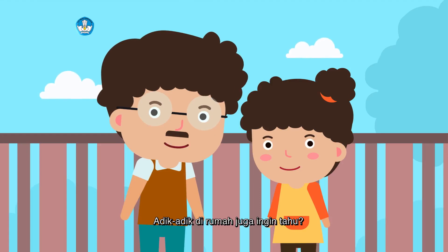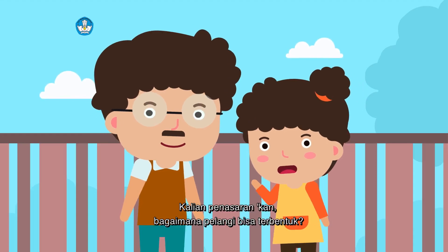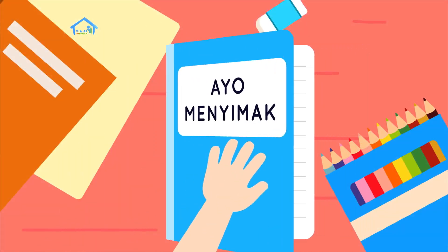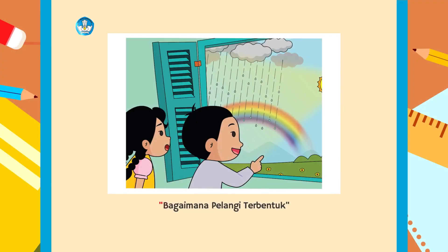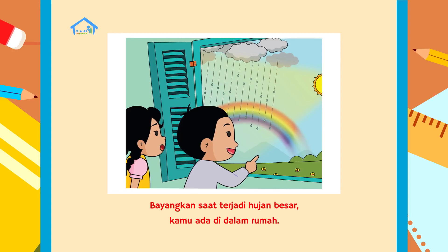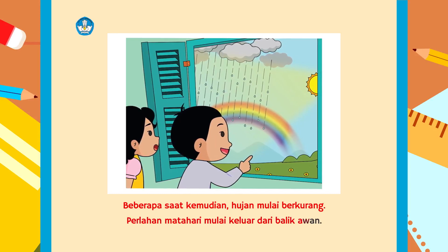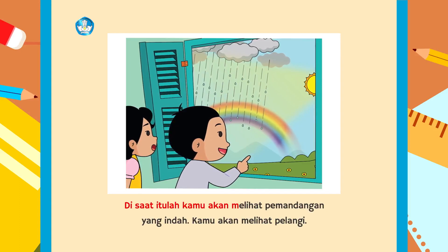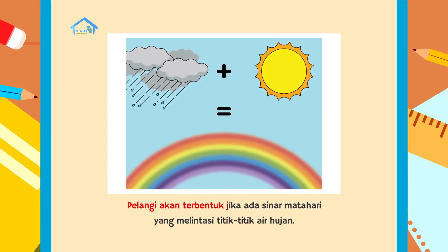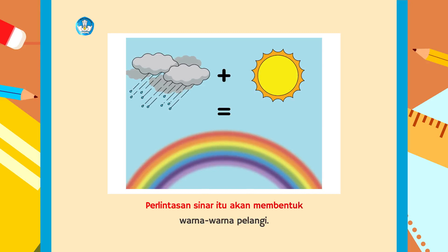Adik-adik di rumah juga ingin tahu. Kalian penasaran kan bagaimana pelangi bisa terbentuk? Ayo ikut ayah! Bayangkan saat terjadi hujan besar, kamu ada di dalam rumah, beberapa saat kemudian hujan mulai berkurang. Perlahan matahari mulai keluar dari balik awan, di saat itulah kamu akan melihat pemandangan yang indah — kamu akan melihat pelangi. Pelangi akan terbentuk jika ada sinar matahari yang melintasi titik-titik air hujan. Perlintasan sinar itu akan membentuk warna-warna pelangi.